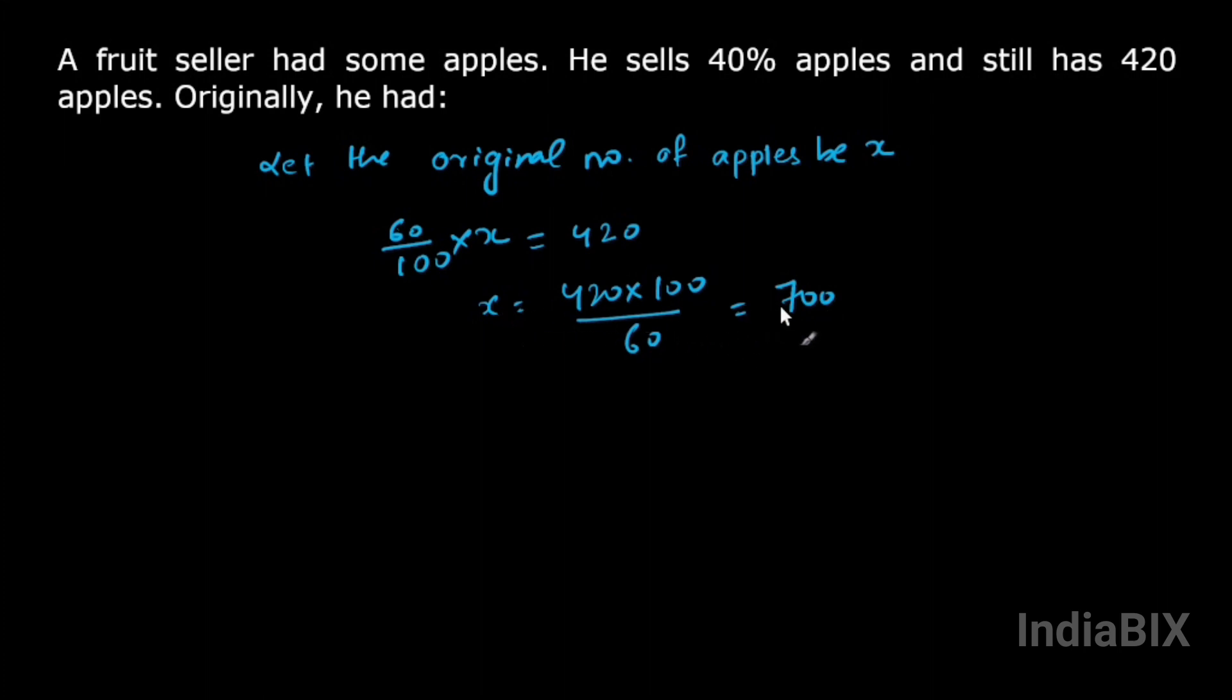The value of X is 700. And X is original number of apples. So we got the answer. The original number of apples that the fruit seller had is 700 apples.